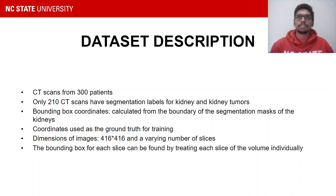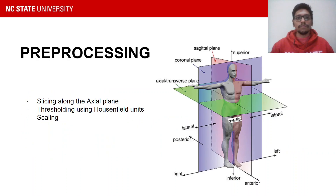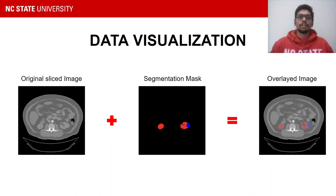We are maintaining the image slices with 416 x 416 dimensions. We slice the 3D volume along the axial plane. The axial plane is highlighted in light green color and runs parallel to the ground if the patient is in a standing position.